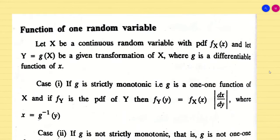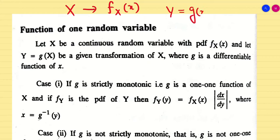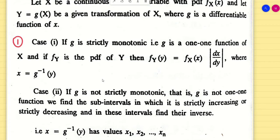Let us take x as a continuous random variable, with its corresponding PDF denoted f_X(x). We assume y = g(x) as a given transformation, and importantly, g must be a differentiable function. We have two cases: the first is that g should be strictly monotonic — either strictly increasing or strictly decreasing — and g must be a one-to-one function of x.